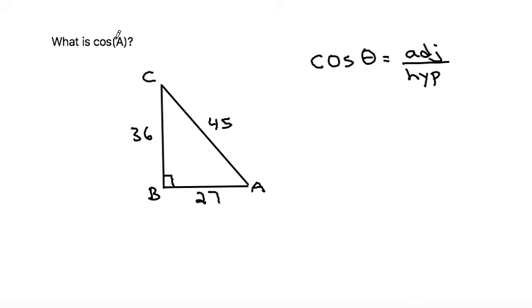So, since it's asking for cosine of A, that means we're looking from the perspective of the angle A. So that would be from this angle here.